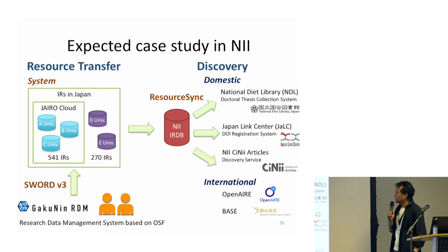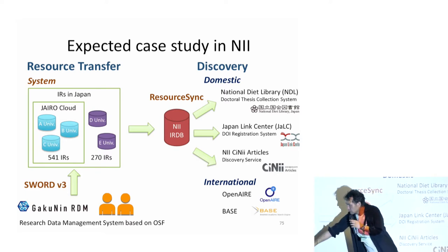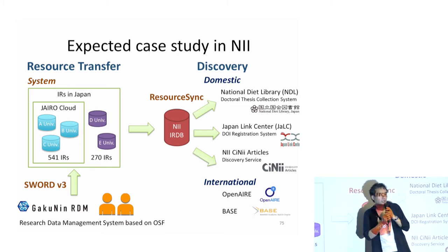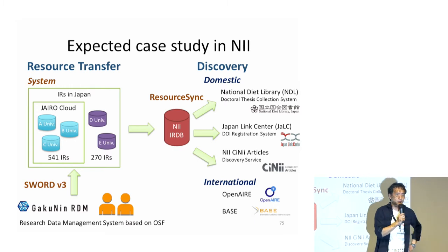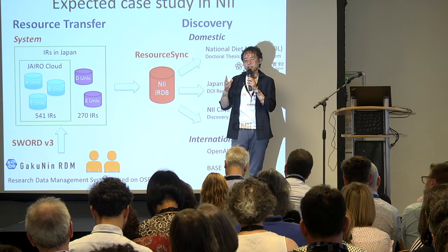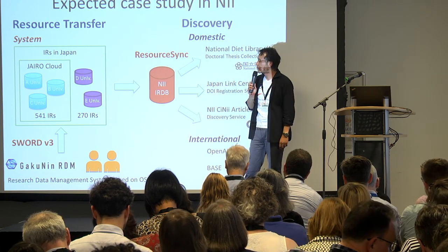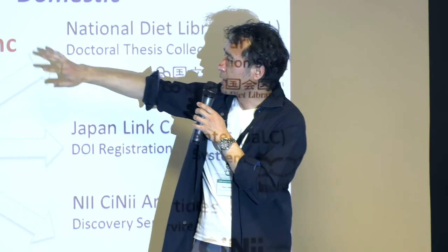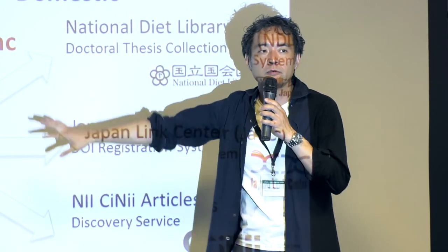In the case of NII and Japan, we will implement SWORD version 3, for which most of the protocol has already been defined. Similar to Andreas's ResourceSync work, a SWORD 3 Python library is expected to be implemented around Open Repository time. After that foundational code is available, we will implement the Invenio SWORD 3 functionality, and also develop a ResourceSync function. This forms the repository network we will have in Japan.